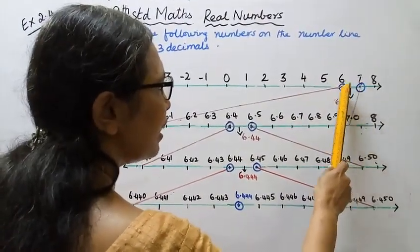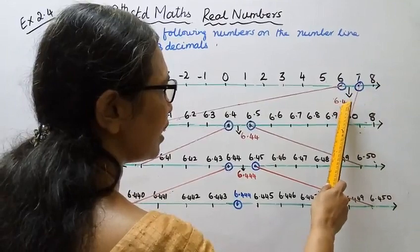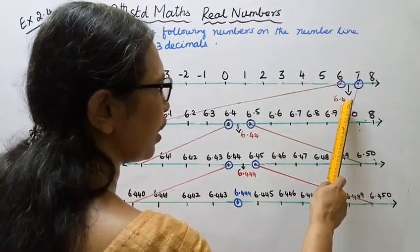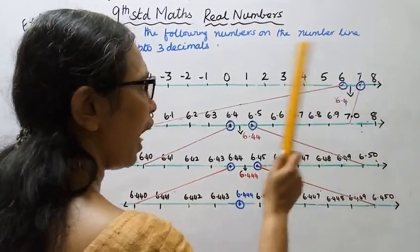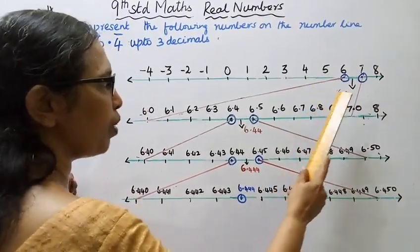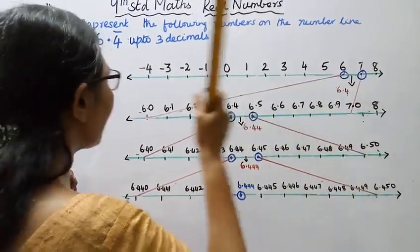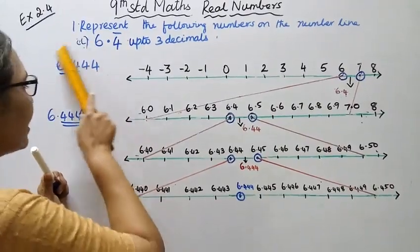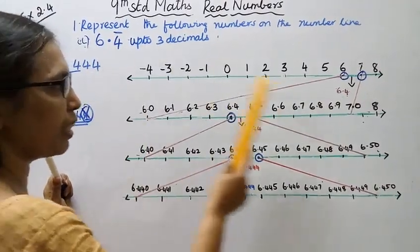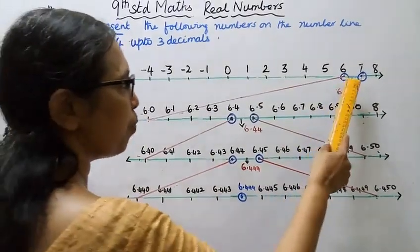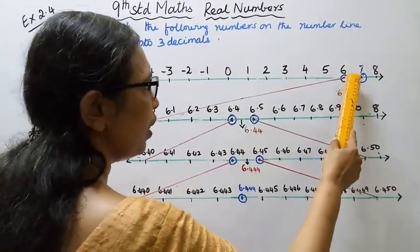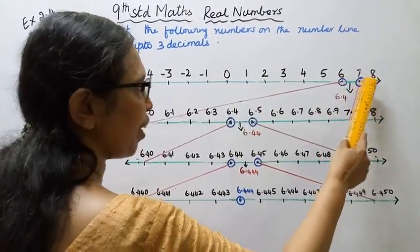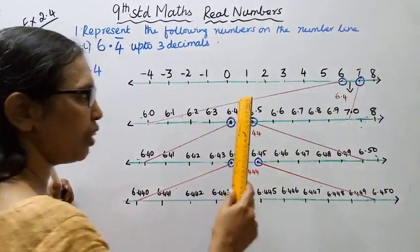This is 6.4. If we get 6, 7, 8, then we identify that 6.4 lies between 6 and 7 on the number line.